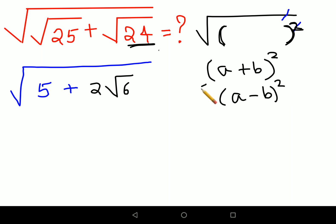And in both the cases, the expansion looks like this: a square plus 2ab plus b square for a plus b the whole square. And for a minus b, the whole square looks like this: a square minus 2ab plus b square.